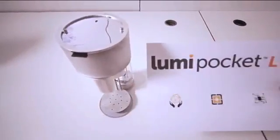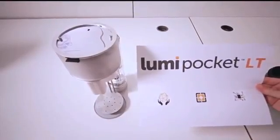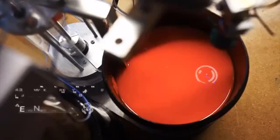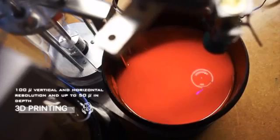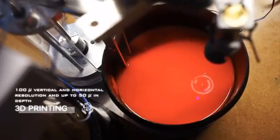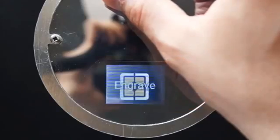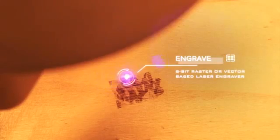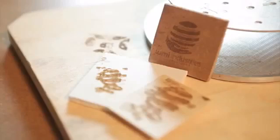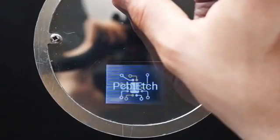This is Lumi Pocket LT. All in one. Resin based 3D printer. Laser engraver. Composure on the inside, laser on the outside. UV PCB etcher.